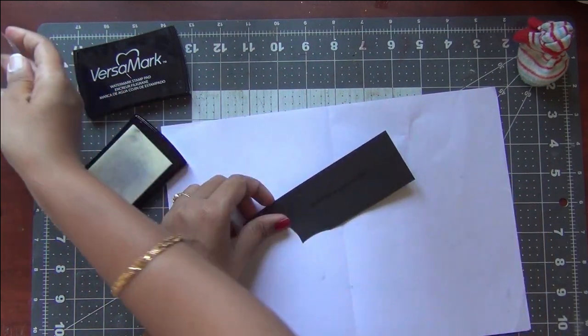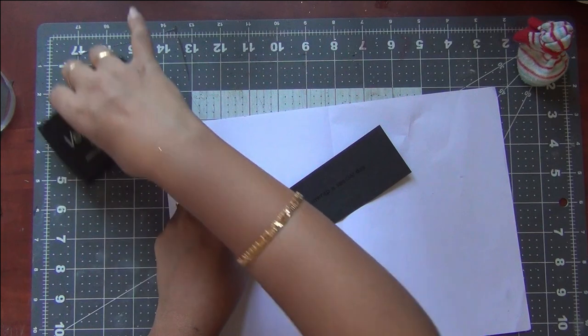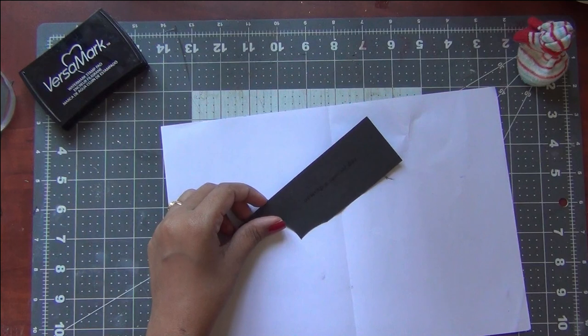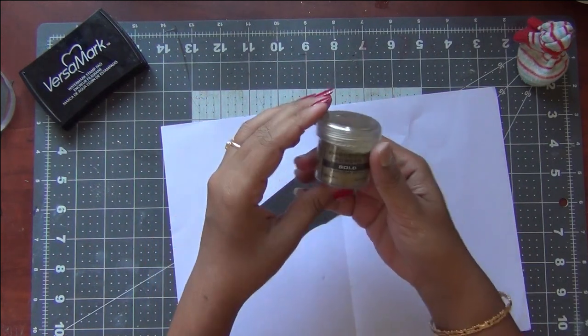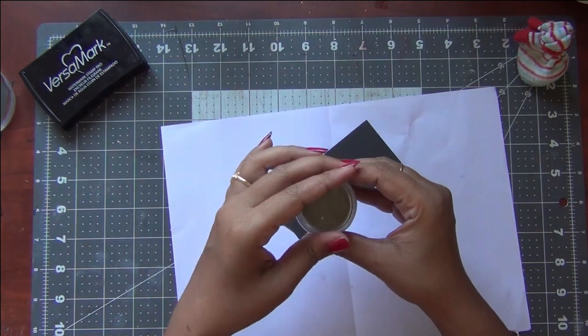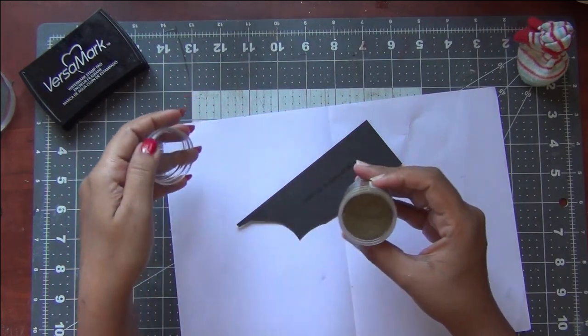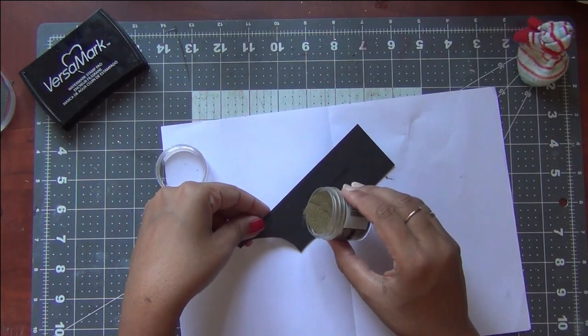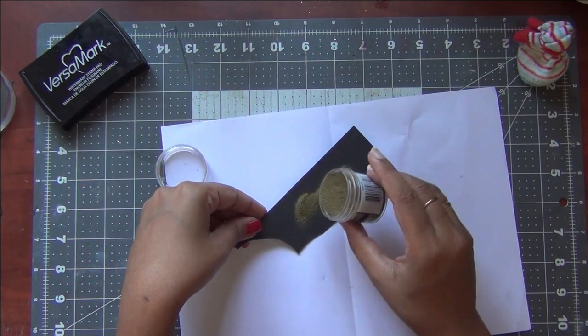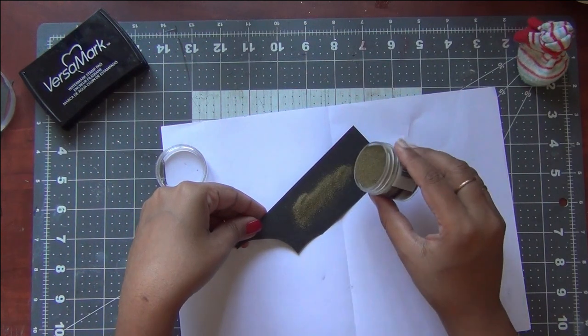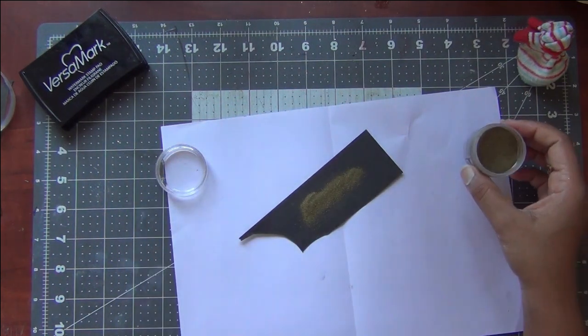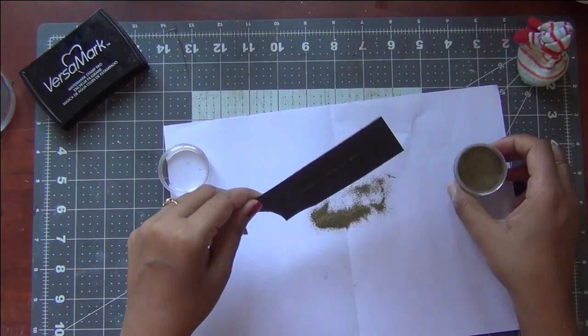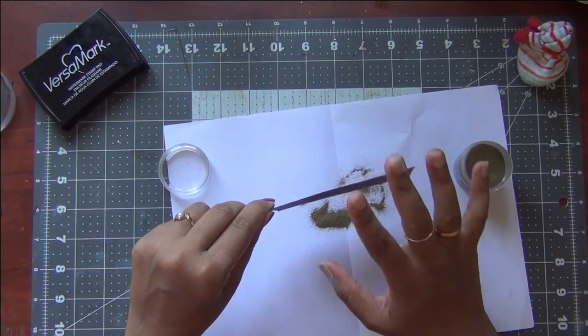Once I am done stamping it, all I will be doing is pouring some gold embossing powder onto the stamped image. I am placing a piece of printer paper underneath my cardstock. I folded it in half. Now I am pouring some gold embossing powder onto my stamped image. Since I folded my printer paper, it's very easy to collect back the excess embossing powder back into my container. Now I am gently tapping off the excess powder.